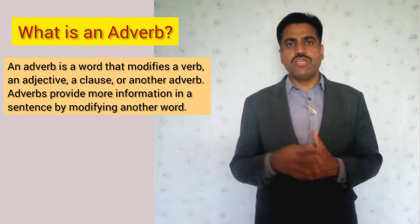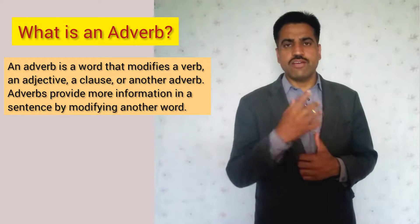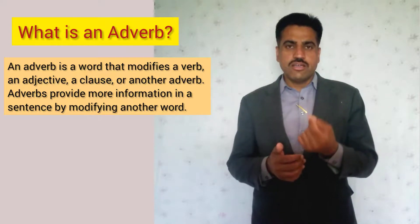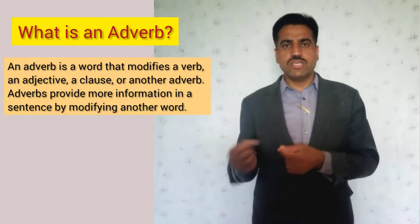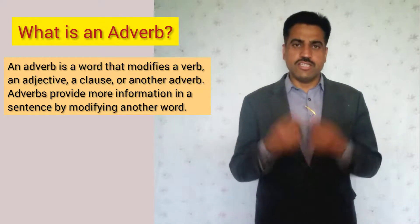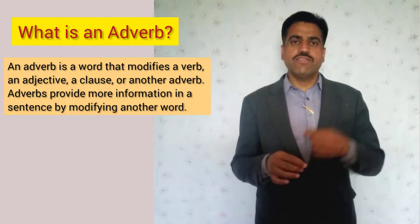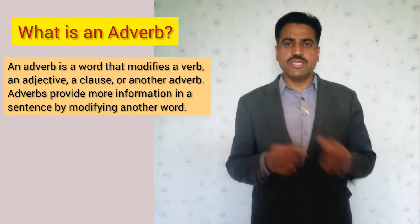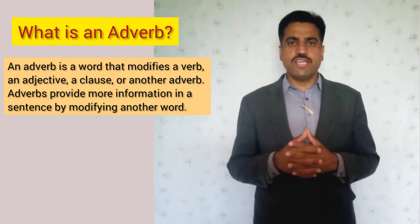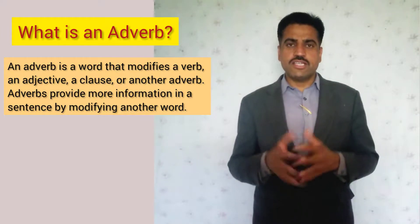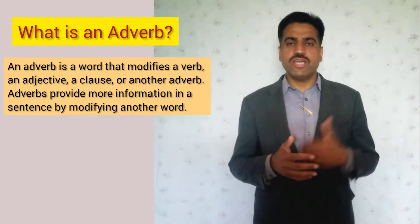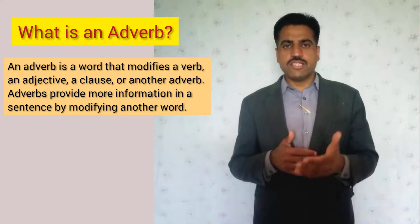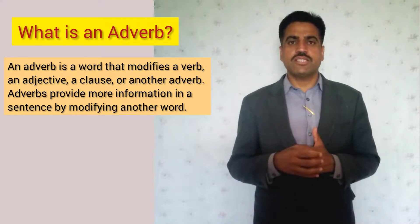Another example: 'She wisely took an extra umbrella with her.' In this sentence, the verb 'took' is modified by the word 'wisely.' So the word 'wisely,' which modifies the verb or gives us more information about the verb, is an adverb. In simple words, any word in a sentence which gives us more information, explains, or modifies the verb, an adjective, or another adverb is called an adverb.